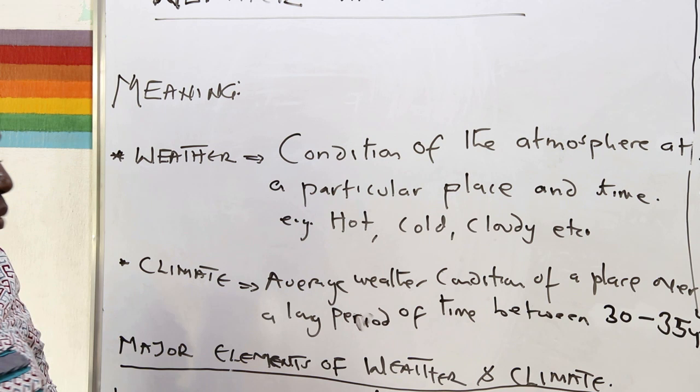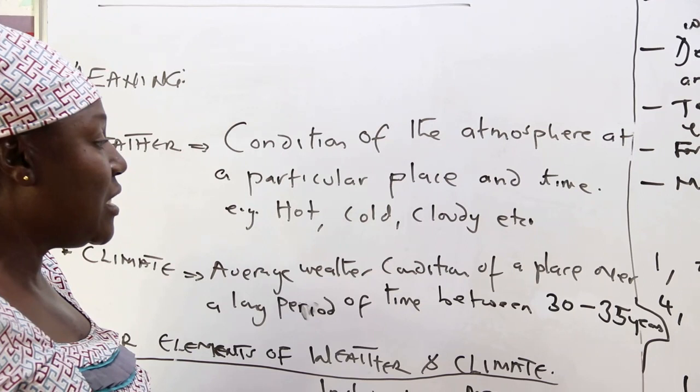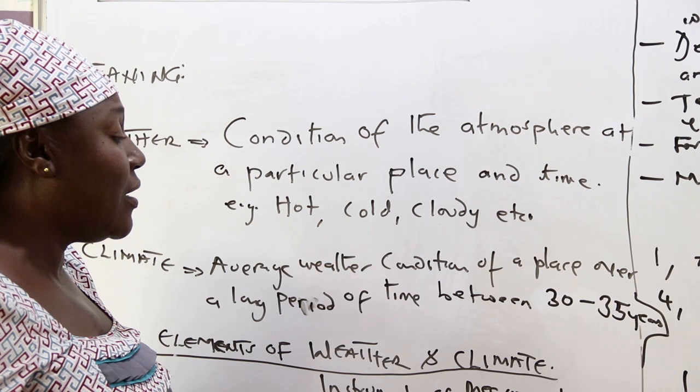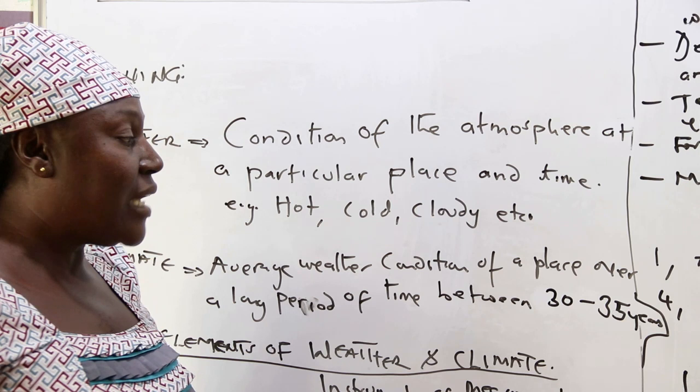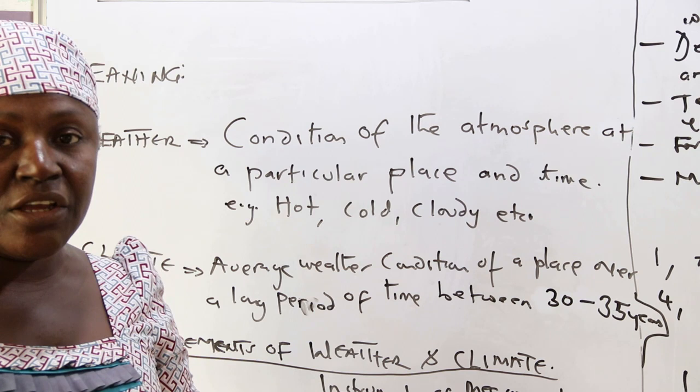Climate, on the other hand, means the average weather condition of a place over a long period of time, usually between 30 to 35 years. So if you want to know the climatic type of an area, what you do is to keep the records of weather over a number of years between 30 to 35. And at the end of these years, you calculate the average, and the average will give you the climatic type of a particular area.